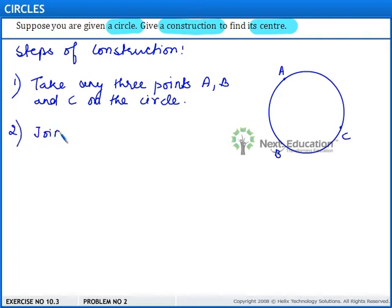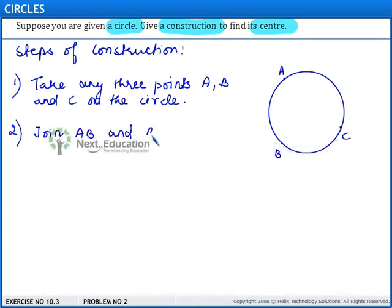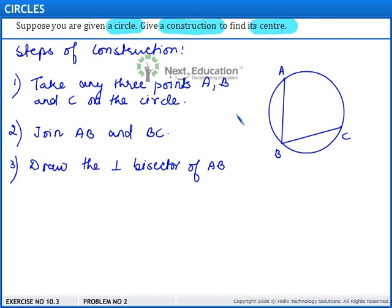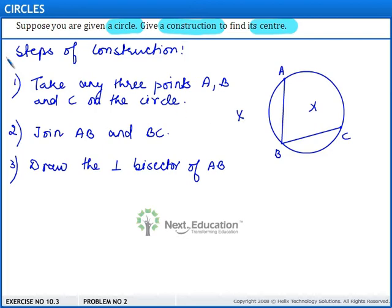The second step is: join A to B and B to C. Now let us join the points A, B and B, C. The third step is: draw the perpendicular bisector of AB and BC. Let us name the perpendicular bisector of AB as line L.